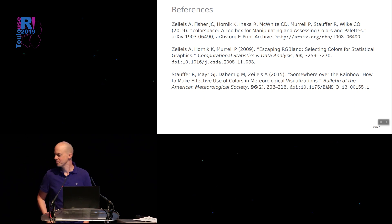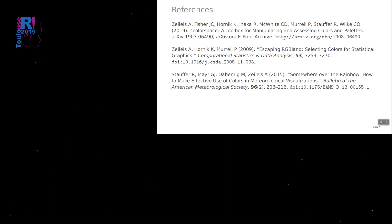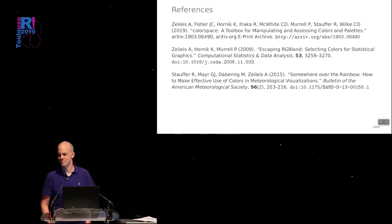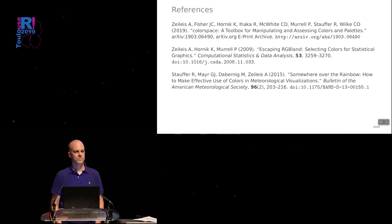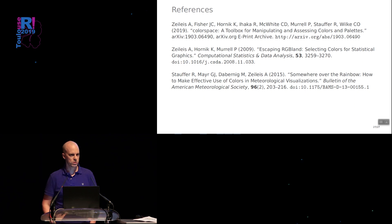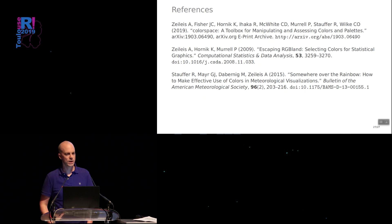Question from the audience: where does alpha transparency fit — is it somewhere in the vector space between H, C, and L? Answer: alpha for transparency is orthogonal to all of this. You can put an alpha onto your palette if you want to. The palette functions have an alpha argument that by default is fully opaque. So it's an independent, additional dimension.